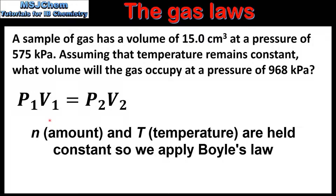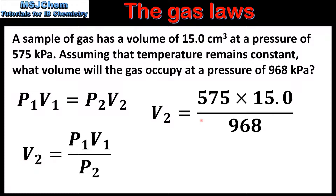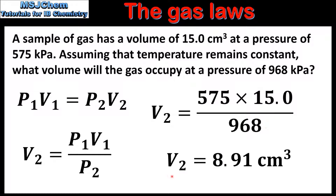In the question we are given P1, V1 and P2, so we need to solve for V2. Here we have the equation rearranged to solve for V2. Next we substitute the values: P1 is 575 kilopascals, V1 is 15.0 cubic centimetres, and P2 is 968 kilopascals. This gives us a value for V2 of 8.91 cubic centimetres.